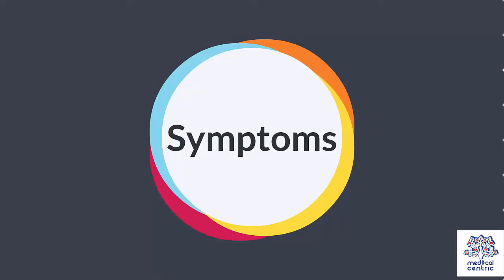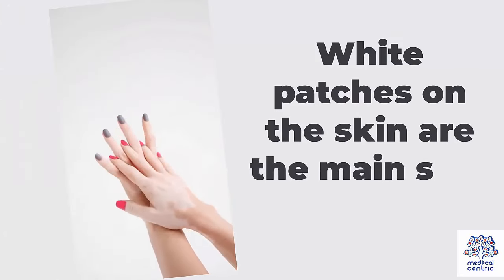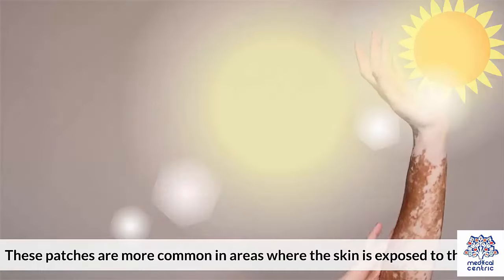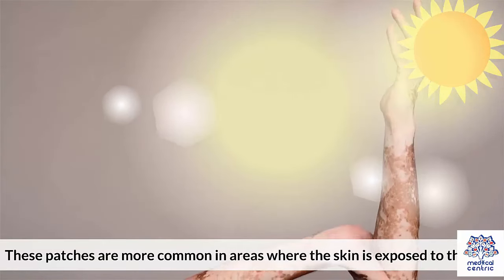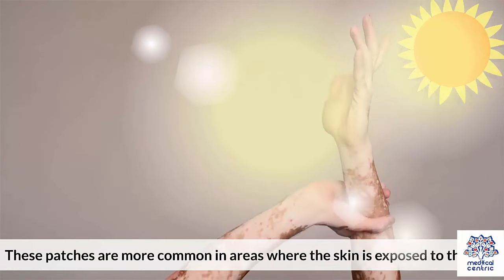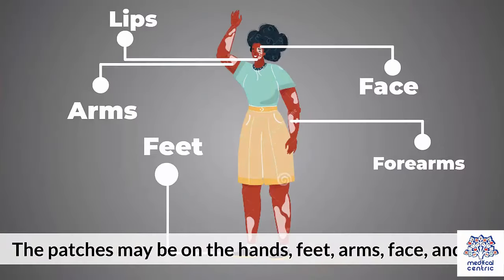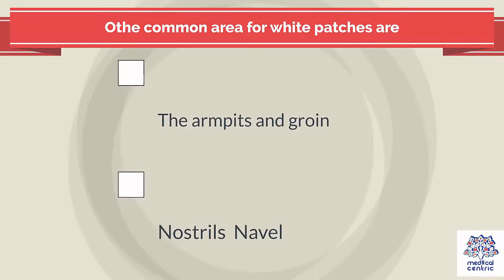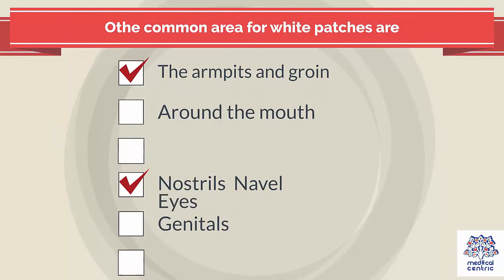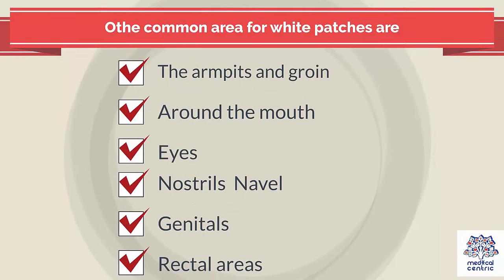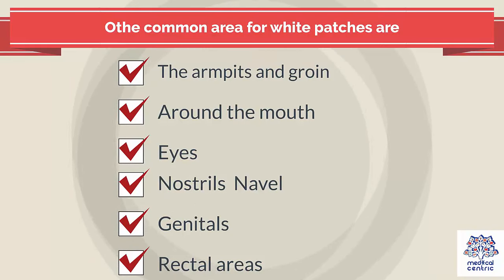Symptoms: White patches on the skin are the main sign of vitiligo. These patches are more common in areas where the skin is exposed to the sun. The patches may be on the hands, feet, arms, face, and lips. Other common areas for white patches are the armpits and groin, around the mouth, eyes, nostrils, navel, genitals, and rectal areas.